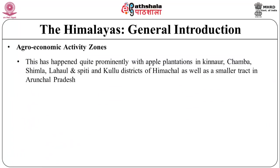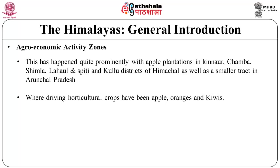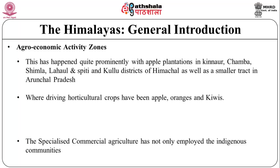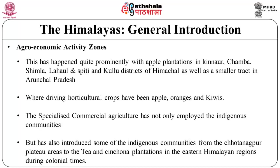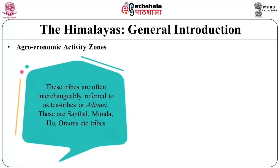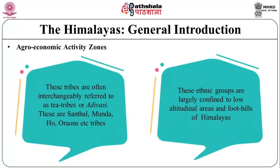The horticultural mission has extended specialized commercial agriculture to mid and high altitudinal areas, most prominently with apple plantations in Kinnaur, Chamba, Shimla, Lahaul-Spiti, and Kullu districts of Himachal Pradesh, as well as smaller tracts in Arunachal Pradesh, where key horticulture crops are apples, oranges, and kiwis. The specialized commercial agriculture has not only employed indigenous communities but also introduced communities from the Chhota Nagpur Plateau — such as Santhals, Mundas, and Hos — to tea and cinnamon plantations in the eastern Himalayan regions during colonial times. These tribes are often referred to as tea tribes or Adivasis, and are largely confined to low altitudinal areas and foothills.